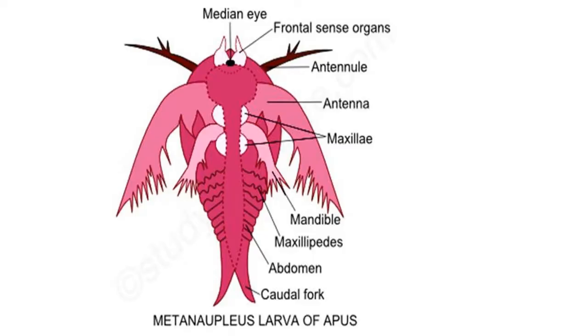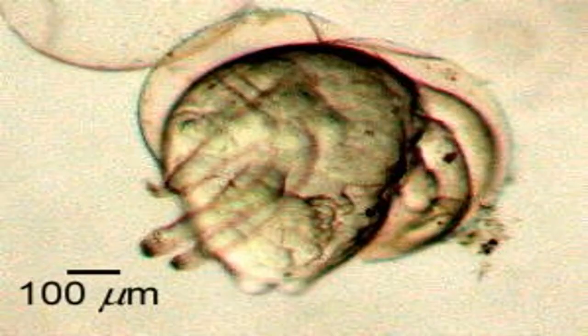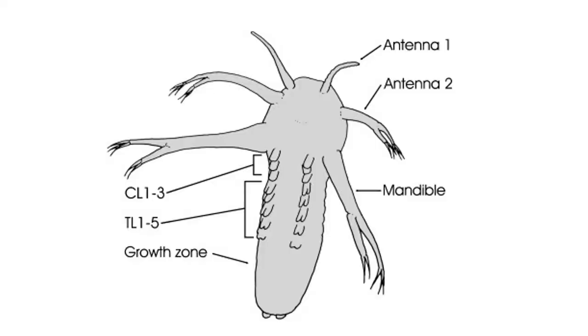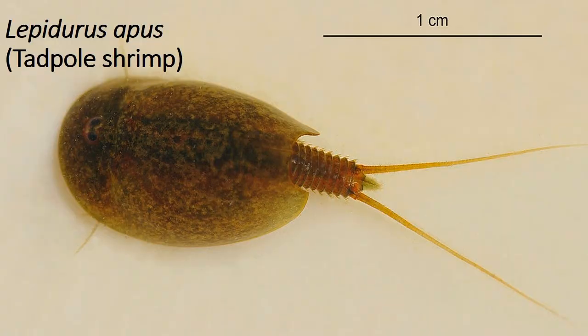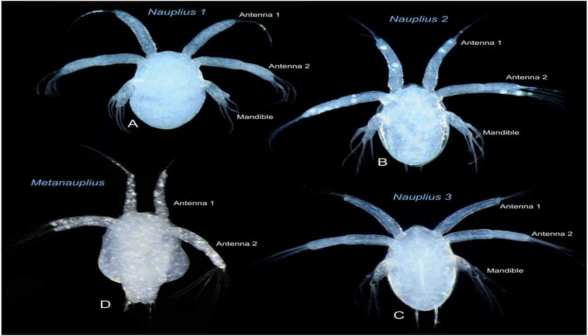Metanauplius is the later Nauplius instar and results by the process of molting and growth. Its body is divisible into a broad cephalothorax and an elongated abdomen terminating into a pair of caudal forks. Besides the three pairs of naupliar appendages, it also bears rudiments of four pairs of appendages, which are two pairs of maxillae and two pairs of maxillipedes of the adults. Some Decapods and Stomatopods and other crustaceans like Apus begin their life history with the free-swimming Metanauplius larvae.